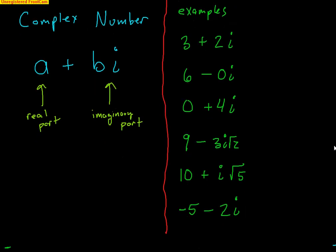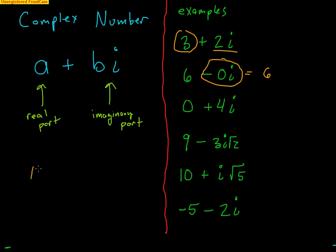Back to complex numbers — it's a combination of a real part and an imaginary part. The general form of a complex number is a + bi, where a is the real part and bi is the imaginary part. Examples: 3 + 2i has real part 3 and imaginary part 2i. A number like 6 can be written as 6 − 0i. Even plain 10 can be written as 10 + 0i. A pure imaginary like 4i is written as 0 + 4i. Other examples include 9 − 3i√2, 10 + i√5, and −5 − 2i.